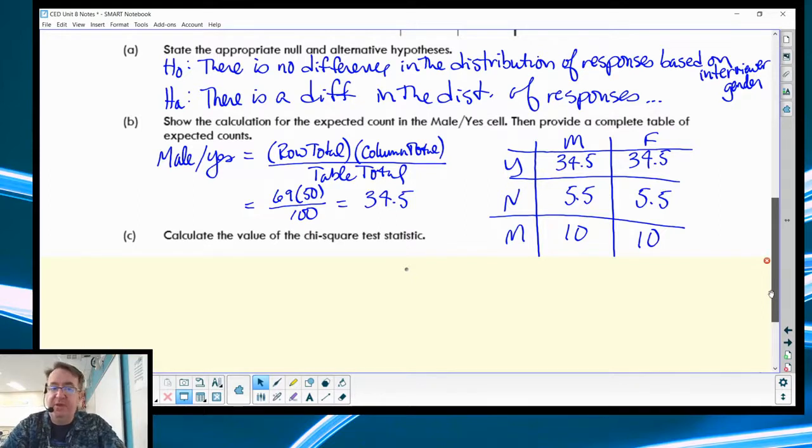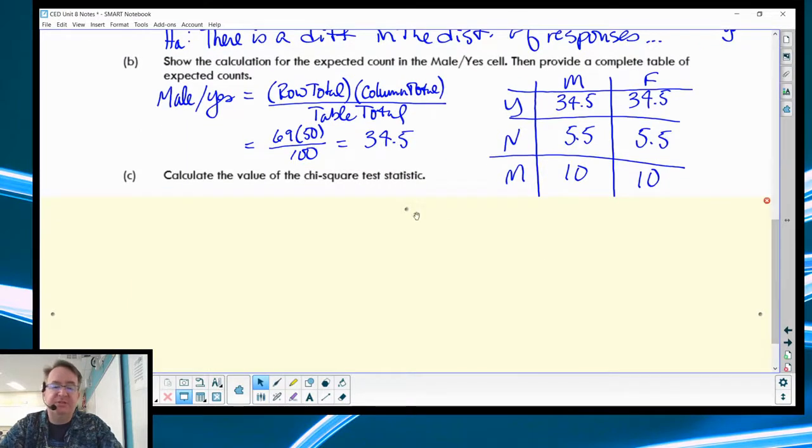We have 50 males being asked by a male interviewer, and we have 50 males being asked by a female interviewer. So notice here your expected values straight across the board are going to be the same all the way down. Don't assume that unless you see the fact that you do actually have population one and population two with the same size. But that makes your life a little bit easier.